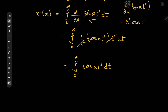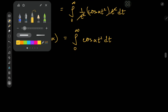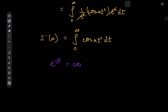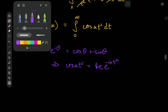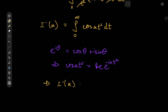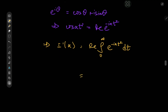This is a Fresnel integral, and we're going to solve it by throwing in some complex analysis. We know that e to the iθ equals cosine θ plus i times sine θ. So cosine α t squared equals the real part of e to the i α t squared, and because cosine is an even function, it also equals the real part of e to the negative i α t squared. So I prime of α equals the real part of the integral from zero to infinity of e to the negative i α t squared dt, which is a nice complex Gaussian integral.